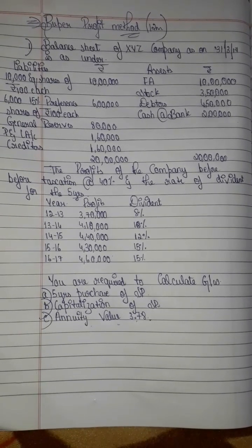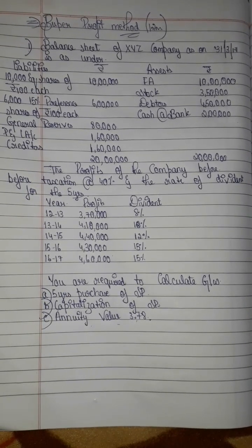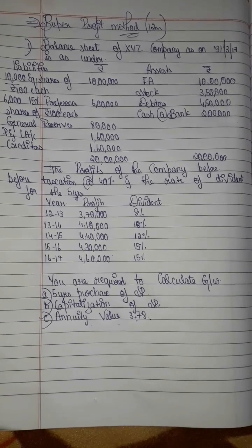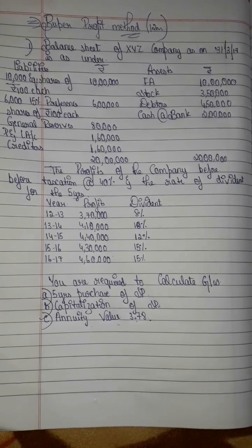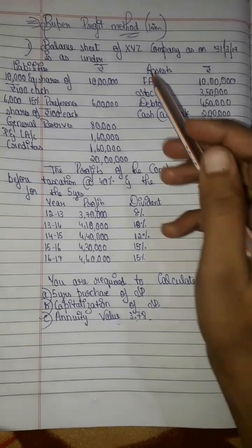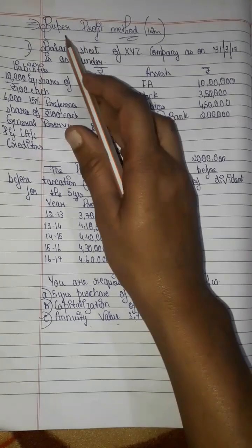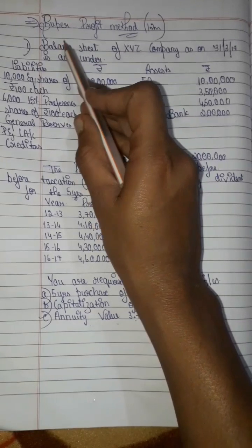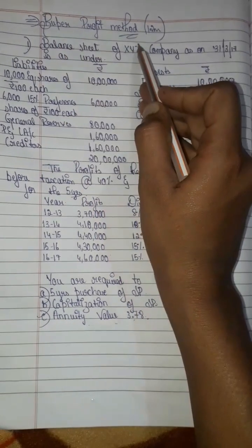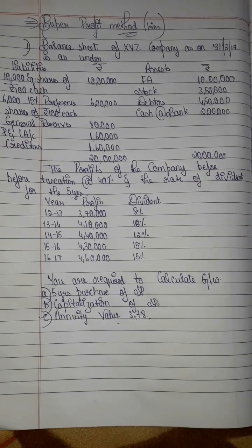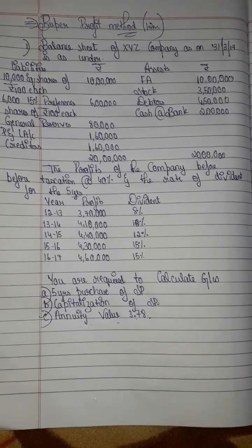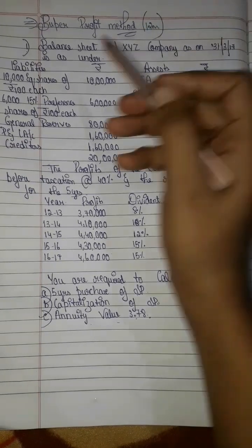This is a corporate account. In my previous video, we explained Chapter 2, the second method. This is the super profit method. This is usually a question for 12 marks. This is another method.